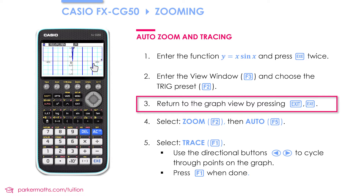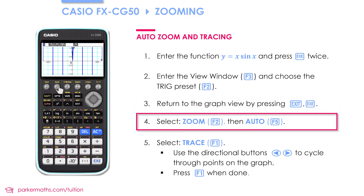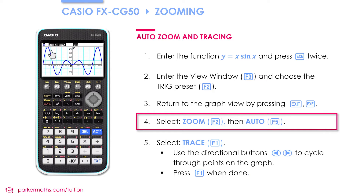Let's see what the graph looks like now by pressing EXIT and EXE. The range of x values now looks a little bit more sensible, but we can clearly see the graph is going off the screen at the top and the bottom. We could try and adjust the y values manually in V window, but often it's worth first trying one of the zoom functions. I'm going to press zoom which is F2 and then choose the auto zoom which is F5. In this case it's nicely sorted out the y scale so I can see much more of the graph. In general the auto zoom is good at getting the minima and maxima to fit on the screen.